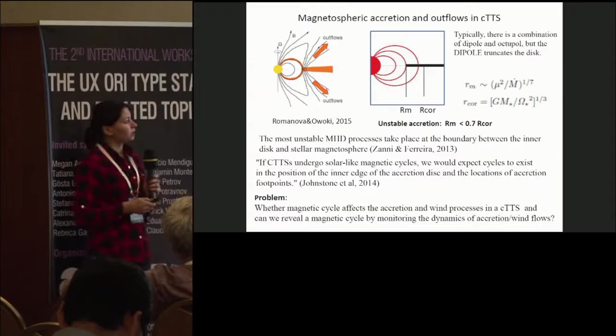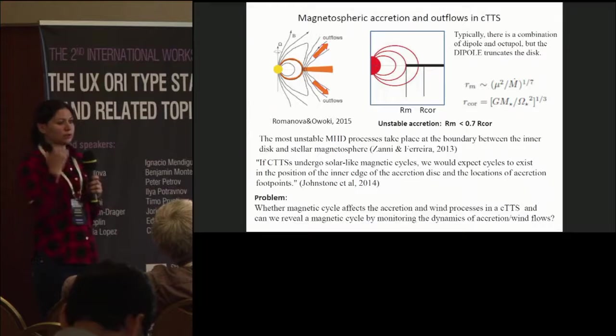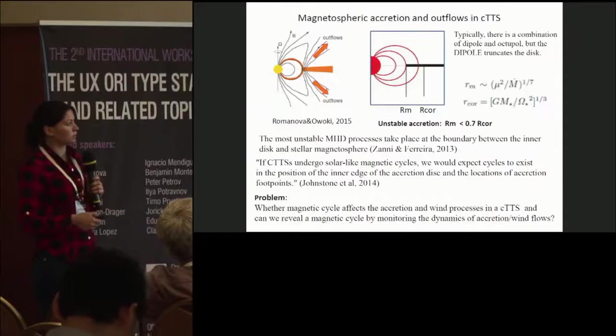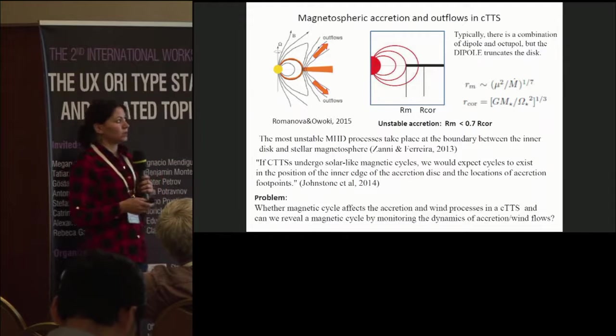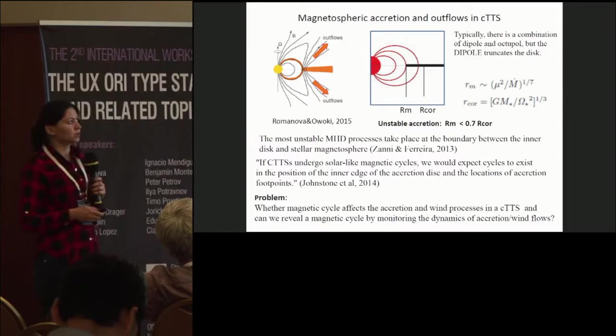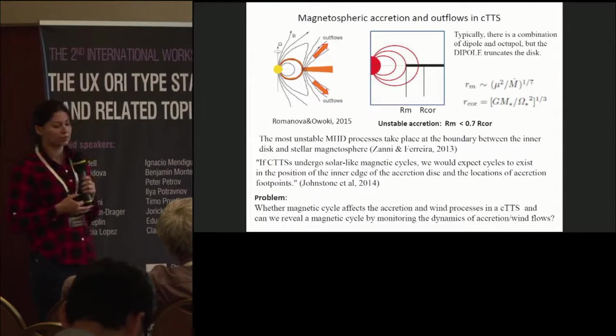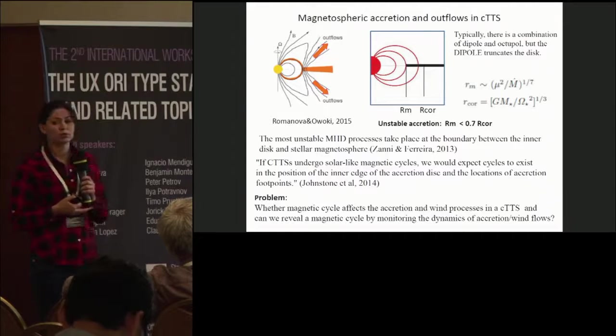Two of the most important parameters are co-rotation radius and radius of stellar magnetosphere. The last one depends on magnetic moment and accretion rate. So, we pose a problem whether magnetic cycles affect accretion and wind processes in classical T-Tauri stars, and can we reveal magnetic cycles by monitoring the dynamics of accretion and wind flows.